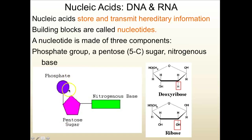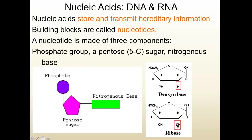The first part is a phosphate group — not a phosphate atom, but a group that has phosphate and oxygens around it. Then there is a five-carbon sugar called a pentose sugar — penta means five. And then there is a nitrogenous base, a molecule that has nitrogen in it and is slightly basic. In DNA — deoxyribonucleic acid — the sugar is called deoxyribose. In RNA — ribonucleic acid — the sugar is called ribose. The only difference between ribose and deoxyribose is that ribose has an oxygen that deoxyribose does not. It's a very small but significant difference.